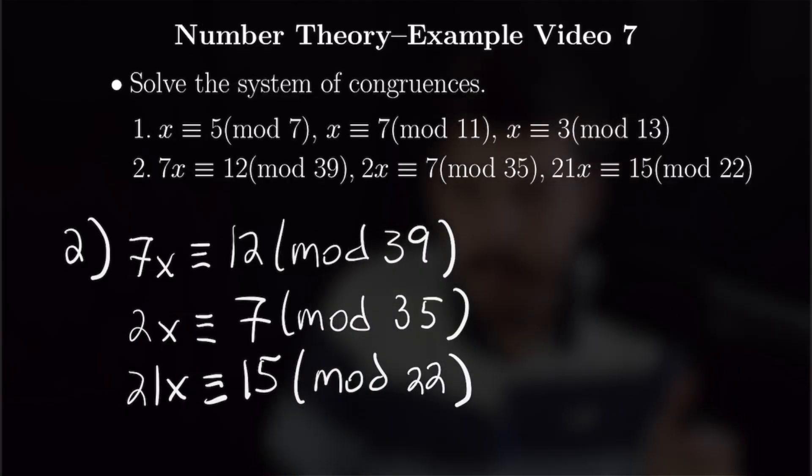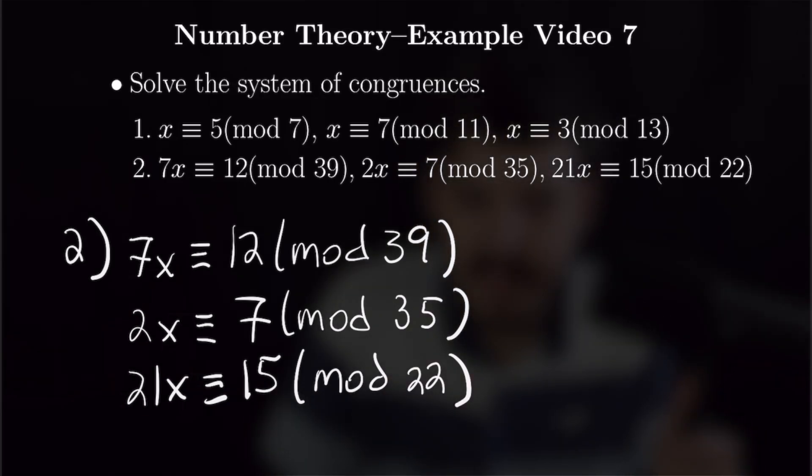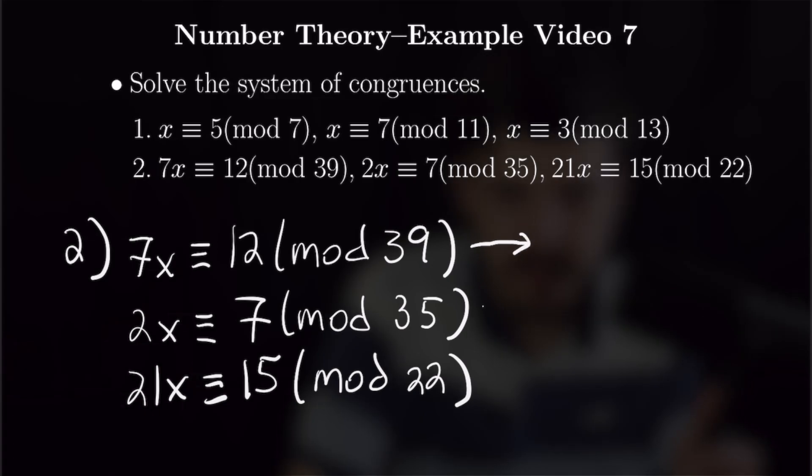For part 2, we can't immediately go into our derivation for the Chinese remainder theorem as we have coefficients on all of these x's. So first we have to get rid of these coefficients, and we're going to do that by plugging it into Wolfram Alpha, which I will show you here.